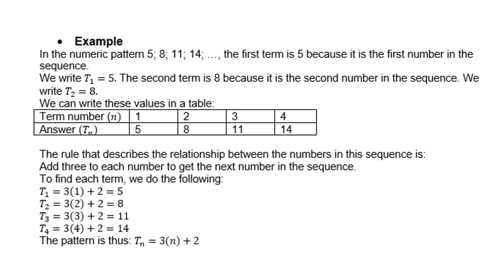Let's do another example. In the numeric pattern 5, 8, 11, and 14, the first term is 5 because it is the first number in the sequence. So we write T1 as 5. The second term is 8 because it is the second term in the sequence. So we write T2 as 8. We can write these terms in a table: term 1 is 5, term 2 is 8, term 3 is 11, term 4 is 14.